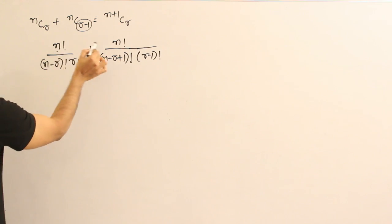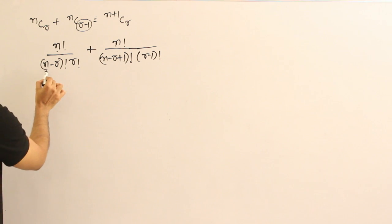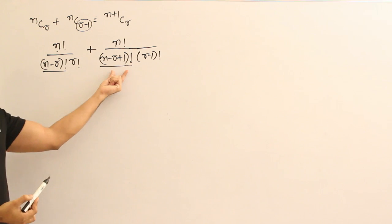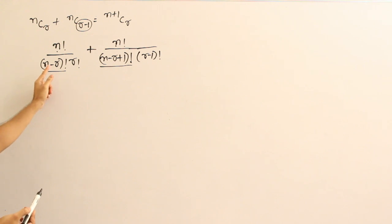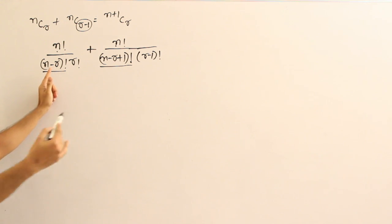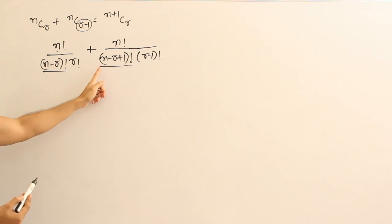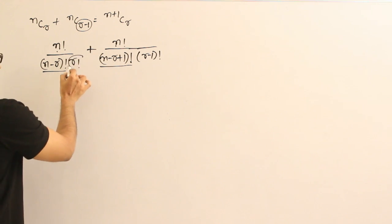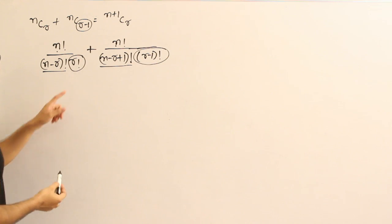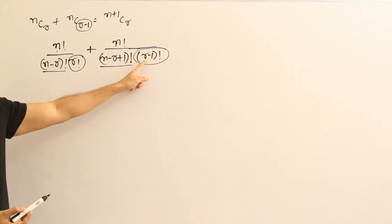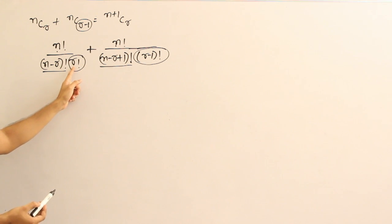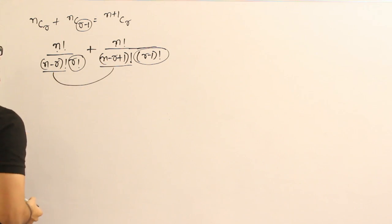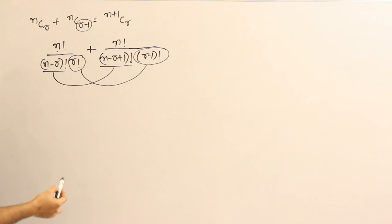Now observe: the numerators of both terms are the same. In the denominators, there is (n minus r) factorial in the first term and (n minus r plus 1) factorial in the second — the second is greater since it goes further. Similarly, r factorial is greater than (r minus 1) factorial. So these two pairs of terms each differ by just one factor.